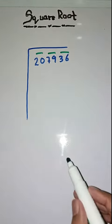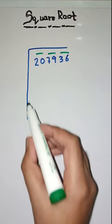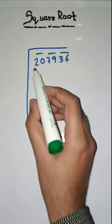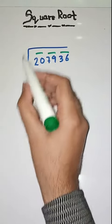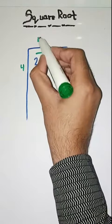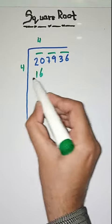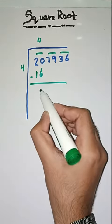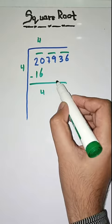So we take a number according to that. We take 4. Why we take 4? Because if we take 5, 5 into 5 is 25. So we take 4. 4 times 4 is 16. We do minus. 20 minus 16 is 4. That's it.